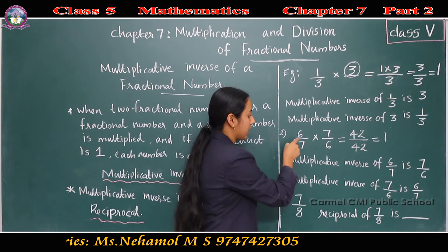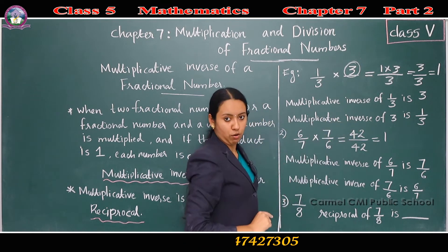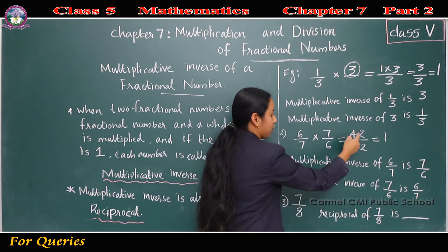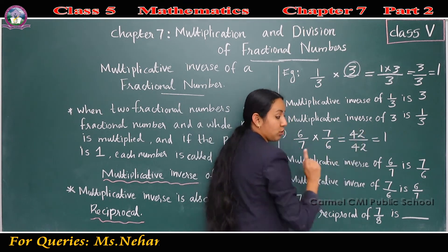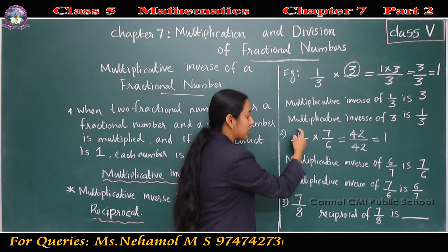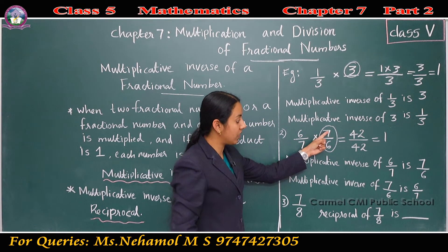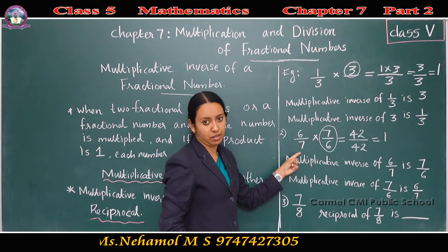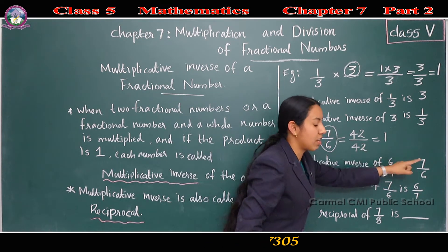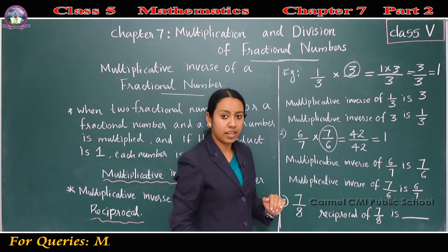Consider another example: 6/7. 6/7 into 7/6 is 1. 6 sevens are 42, 7 sixes are 42, and 42/42 is 1. So the multiplicative inverse or reciprocal of 6/7 is 7/6. And the multiplicative inverse of 7/6 is 6/7.